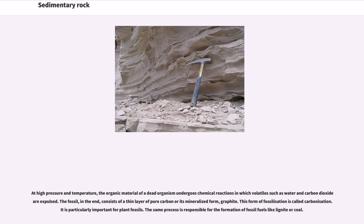At high pressure and temperature, the organic material of a dead organism undergoes chemical reactions in which volatiles such as water and carbon dioxide are expelled. The fossil, in the end, consists of a thin layer of pure carbon or its mineralized form, graphite. This form of fossilization is called carbonization. It is particularly important for plant fossils. The same process is responsible for the formation of fossil fuels like lignite or coal.